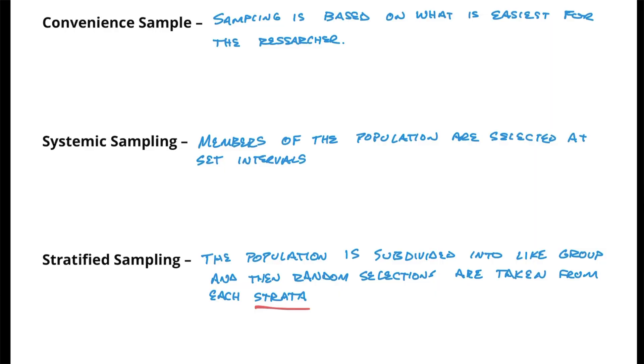There is one last type that sometimes comes up, called a quota sample. A quota sample is a convenience sample of stratified groups. For example, class representatives on the student council each go to their class and just pick five people to sample. They're using the stratified structure, which is good, but maybe they're in advanced classes so they're only getting a sampling of folks in advanced classes — not a true representation of everyone from the grade level. A quota sample has bias too, similar to the convenience sample, but since it uses stratified groups the bias might not be as strong.